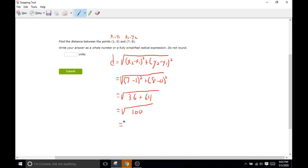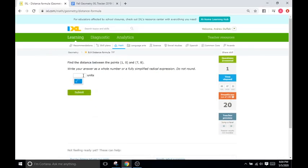36 plus 64 is going to be 100. And what is the square root of 100? What times itself is 100? And that is going to be 10. And that's going to be our distance. Distance is 10 units. Cool.